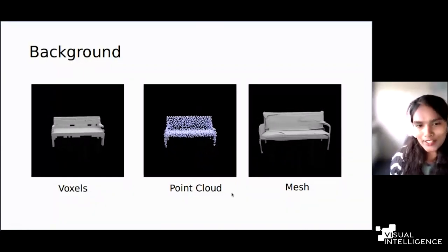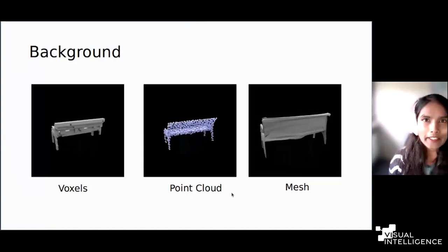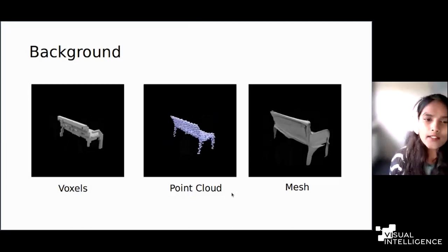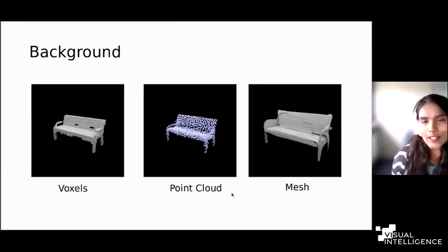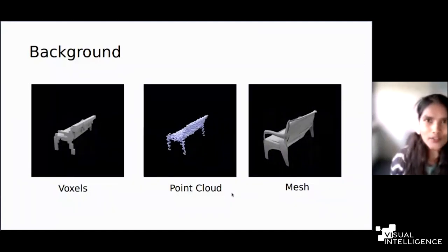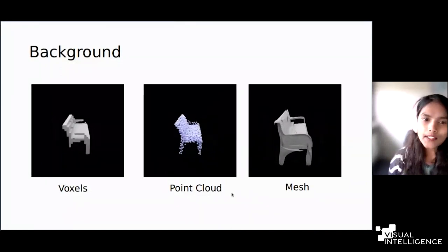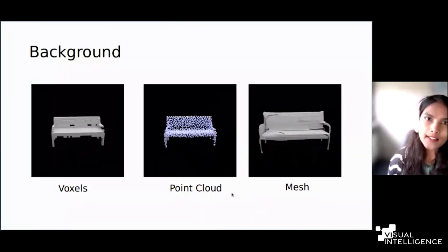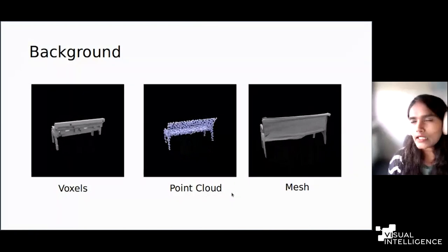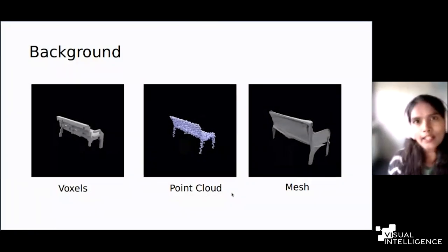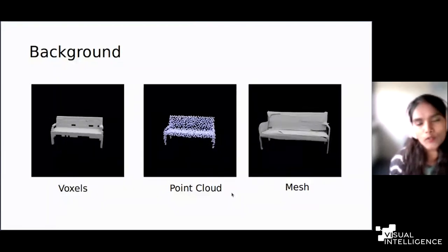The next well-known data representation is the point cloud. We can directly obtain point cloud data from a depth map, so it is readily available data requiring less processing than other 3D representations. The problem is that point clouds are order-invariant, so you need specific data processing to order the points in canonical space before applying deep learning neural networks. They are also not very suitable for representing high-resolution data and are mostly restricted to a certain number of points in research.